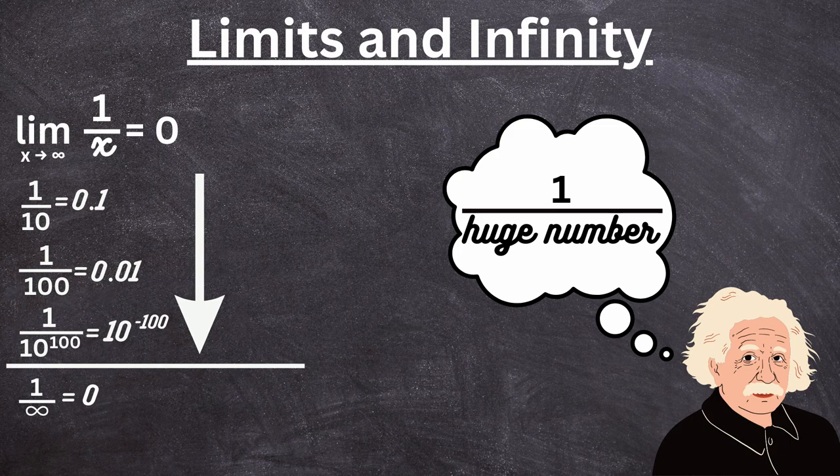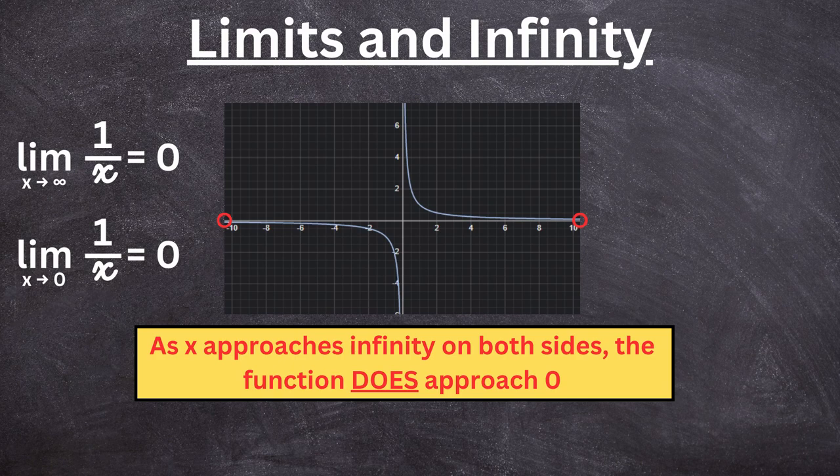0.1, 0.01, 0.00000001, and this is too hard to write out. I'll just write 1 times 10 to the negative 100. As you can see, it gets closer and closer to 0. So the limit as x approaches infinity of 1 over x equals 0.